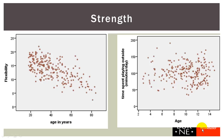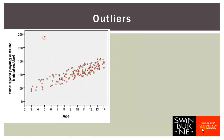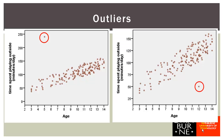The final thing to look at is outliers. In this scatter plot we can see one outlier — a case that stands out as being a lot different from all the other cases. This child was five years old, which is not particularly unusual, but they were spending a lot more time playing outside than all the other children, making them an outlier on our dependent variable. In the second example there is also an outlier, but this one is what we call a bivariate outlier. Their age of 12 was not unusual and the time spent playing outside of around 50 minutes was not unusual, but what is unusual is the combination — it is unusual to find a 12 year old who spent only 50 minutes per day playing outside.